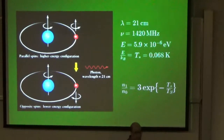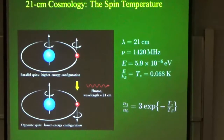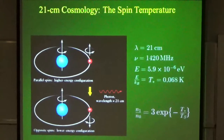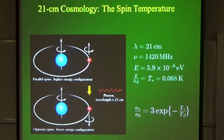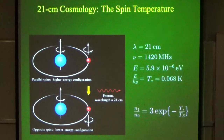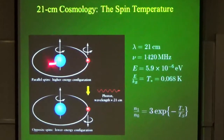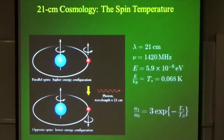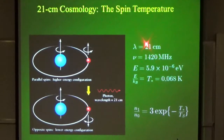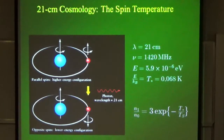Let's start from a look at the background. The field with which people are searching for the first stars is called 21cm cosmology. It uses the 21cm line of the hydrogen atom. In the ground state of hydrogen, the proton and electron can have spins that are aligned parallel or anti-parallel. There's a tiny energy difference between these two states, which gives off a photon in the radio, at a very, very low temperature.